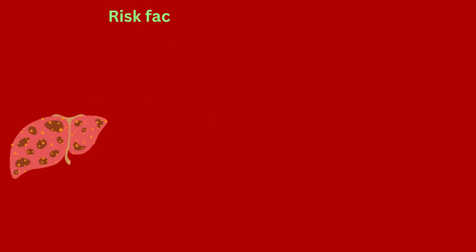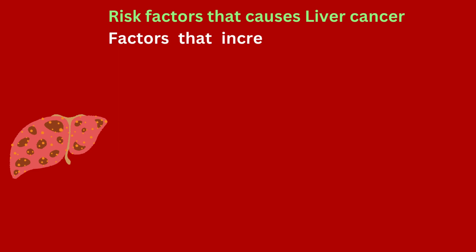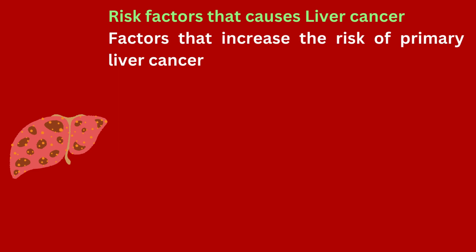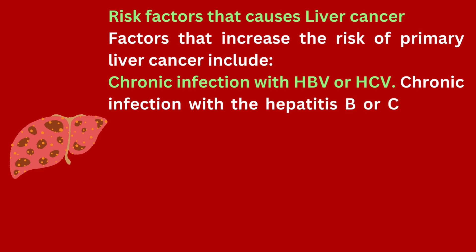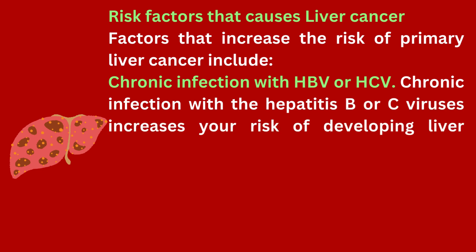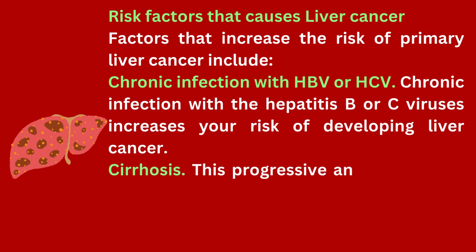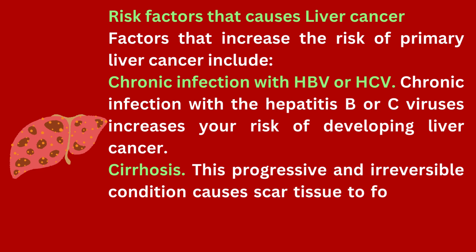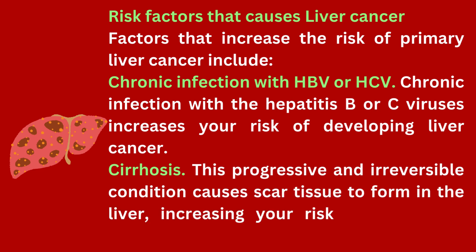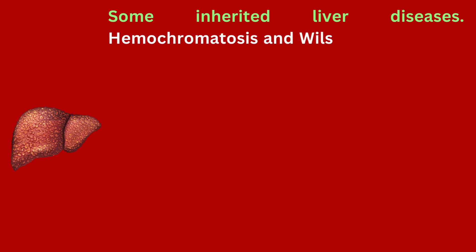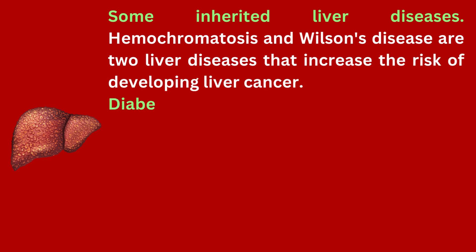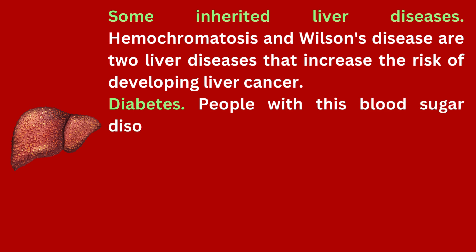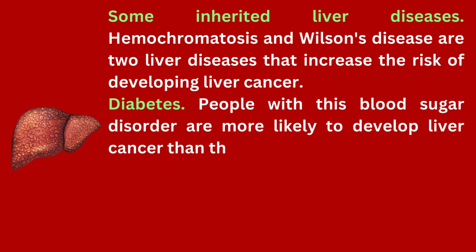Risk factors that increase the risk of primary liver cancer include: chronic infection with hepatitis B (HBV) or hepatitis C (HCV) viruses, which increases your risk of developing liver cancer. Cirrhosis — this progressive and irreversible condition causes scar tissue to form in the liver, increasing your risk. Some inherited liver diseases, such as hemochromatosis and Wilson's disease, also increase the risk of developing liver cancer.